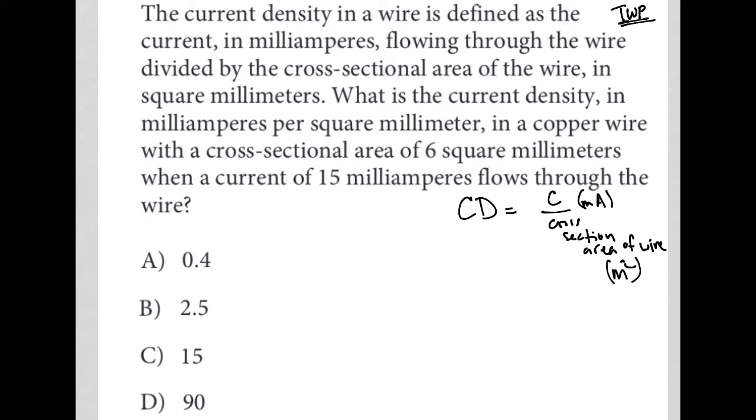The next sentence says, what is the current density, so what is CD, in milliamperes per square millimeter in a copper wire with a cross-sectional area of six square millimeters? So, that means they've given me, they're saying, what is CD when the denominator is six square millimeters? So, six.